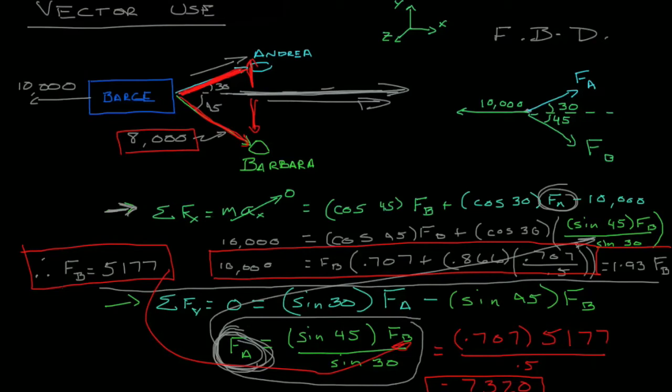So in summary, what we've done here is we've built our free body diagram, we've kind of felt our way a little bit of what each of these vectors means. Then we've summed our forces in the x and in the y directions.